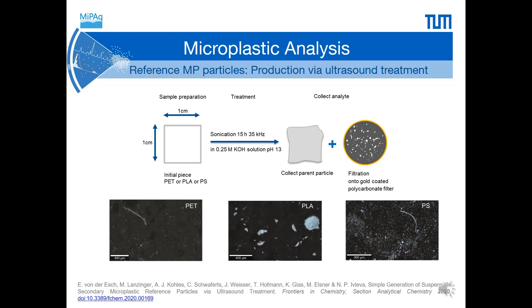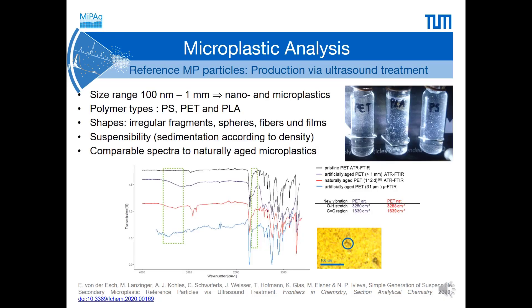Therefore, we developed a method for simple generation of suspensible secondary microplastic reference particles using ultrasound treatment at alkaline conditions. This method is suitable for the production of microplastics with different shapes, including irregular fragments, spheres, fibres, and films. Our procedure yields fragments in the broad size range from 100 nm to 1 mm, so both microplastics and nanoplastics can be produced. The method is validated for polystyrene, polyethylene terephthalate, and polylactic acid. These reference materials are already suspended during their formation and can be efficiently resuspended in pure milli-Q water. Furthermore, the particles show infrared spectra comparable to spectra of naturally aged microplastics, making them well suited as reference materials for method development.